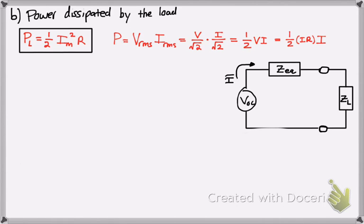V can be written as IR by Ohm's law. And then you can combine the I's there to get 1 half I squared R. And that's where the formula comes from.